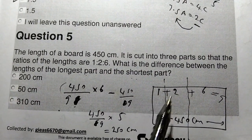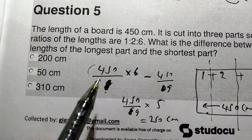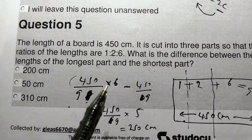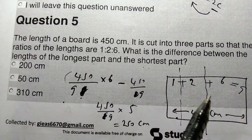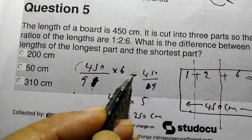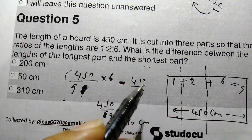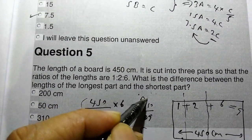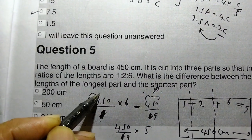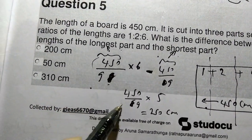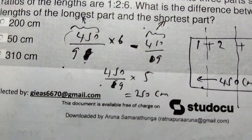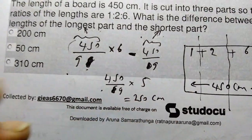Adding the ratios: 1 plus 2 plus 6 equals 9. So 450 divided by 9 gives one part. Multiply by 6 for the longest part. The difference between the longest and shortest parts — solving the equation gives 250 centimeters. Since 250 is not among the answer options, the answer is 'none of these.'